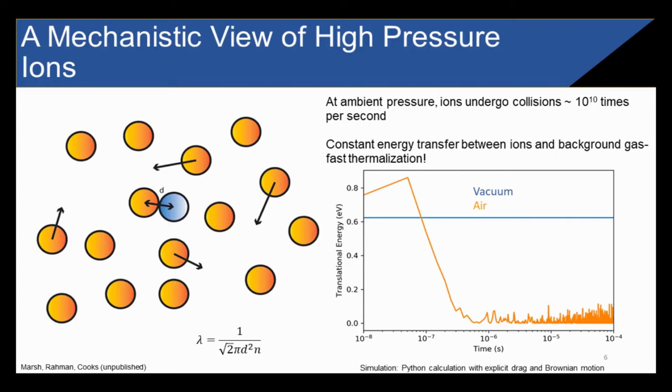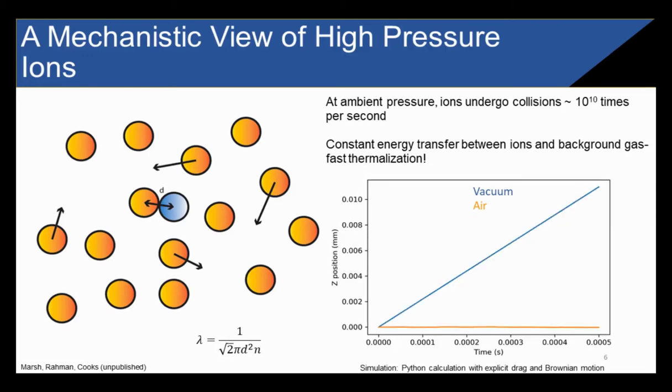This constant energy transfer between ions and background gas has severe consequences for particles in the open air. For example, this is a calculation of the translational energy of a 3 micron droplet produced at roughly 30 times thermal velocity in vacuum in blue and in air in orange. In vacuum, the droplet, of course, travels along its path unimpeded. There's no energy loss. However, in air, the droplet quickly loses energy, and by a microsecond, it's become thermalized. This means that the droplet in vacuum will move 10 microns in less than a millisecond, while the droplet in air is virtually stationary.